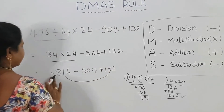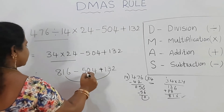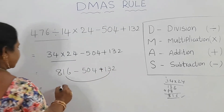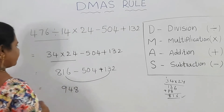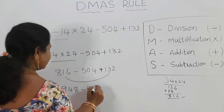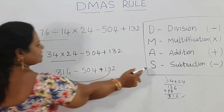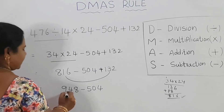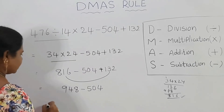Next, addition: 816 plus 132 equals 948. Last step, subtraction: 948 minus 504.